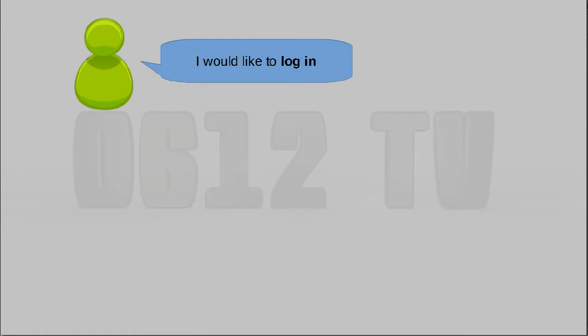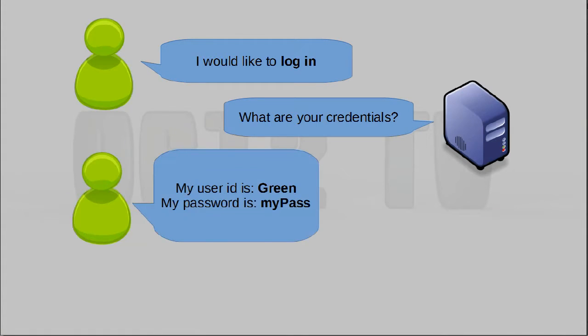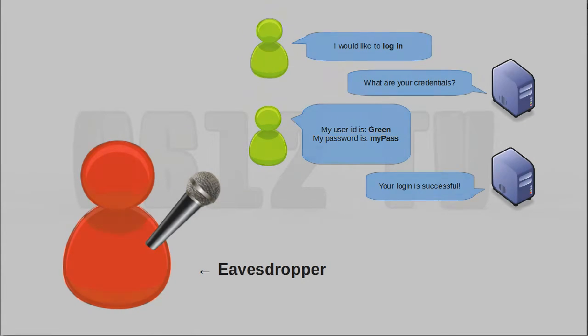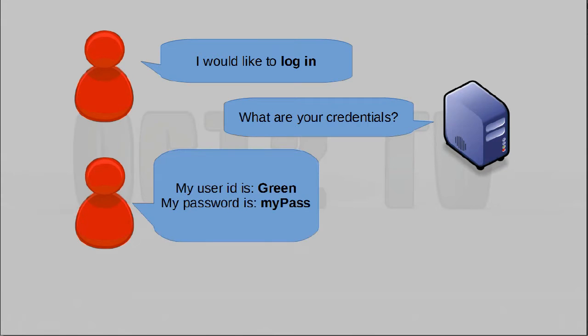Imagine a plaintext authentication situation. We have a user going to a server to log in. The user will furnish their user ID and password. If this entire communication was actually tapped by an eavesdropper, that will give them access to both the username and password. So in the future, this eavesdropper can actually impersonate the user. Obviously, that is the problem.